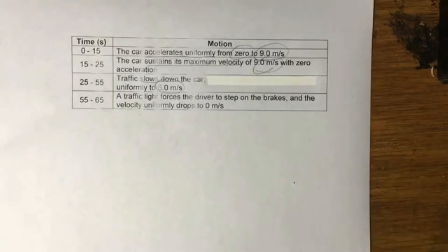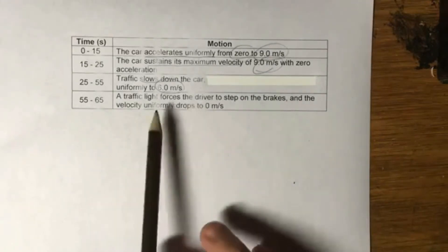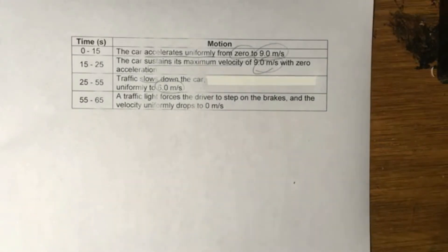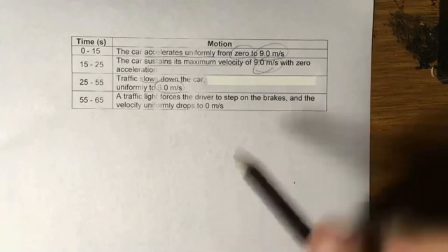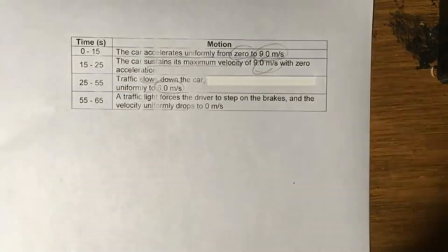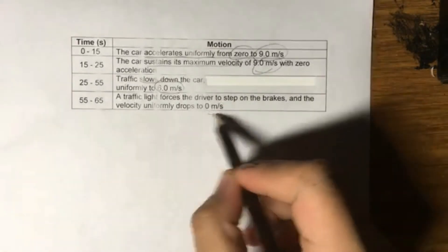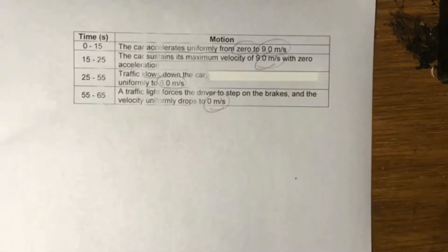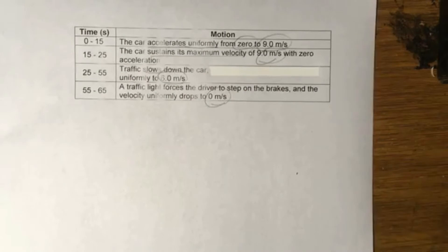And finally, from 55 to 65 seconds, a traffic light forces the driver to step on the brakes and the velocity uniformly drops to zero. So if you could imagine, they're moving very slowly and all of a sudden the car up front stops. The driver is forced to stop after 10 seconds. So how are we going to create a proper motion graph out of this?